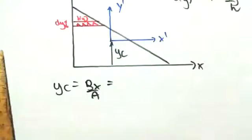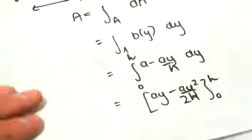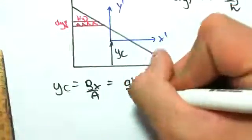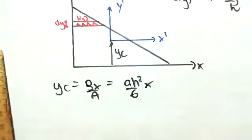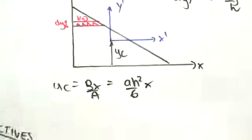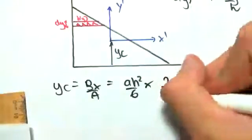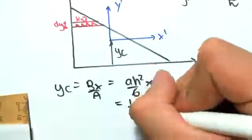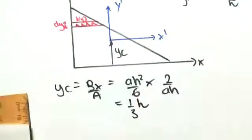So if we want to refine this, we know from the previous video that bx is ah squared on 6. Dividing is the same as multiplying by the reciprocal. So the area we found to be ah on 2. So we're going to be multiplying by 2 on ah. If we were to solve this, we would get that yc equals 1/3 h.